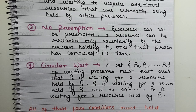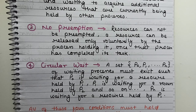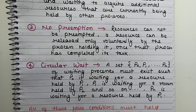Both processes are waiting, and one of them could break the chain by giving a resource to the other, but neither does so. With no preemption, you cannot take away any resource from any process — the process has to release those resources voluntarily by itself. If resources cannot be taken once allocated, this is one of the necessary conditions for a deadlock. The fourth and last condition is circular wait.